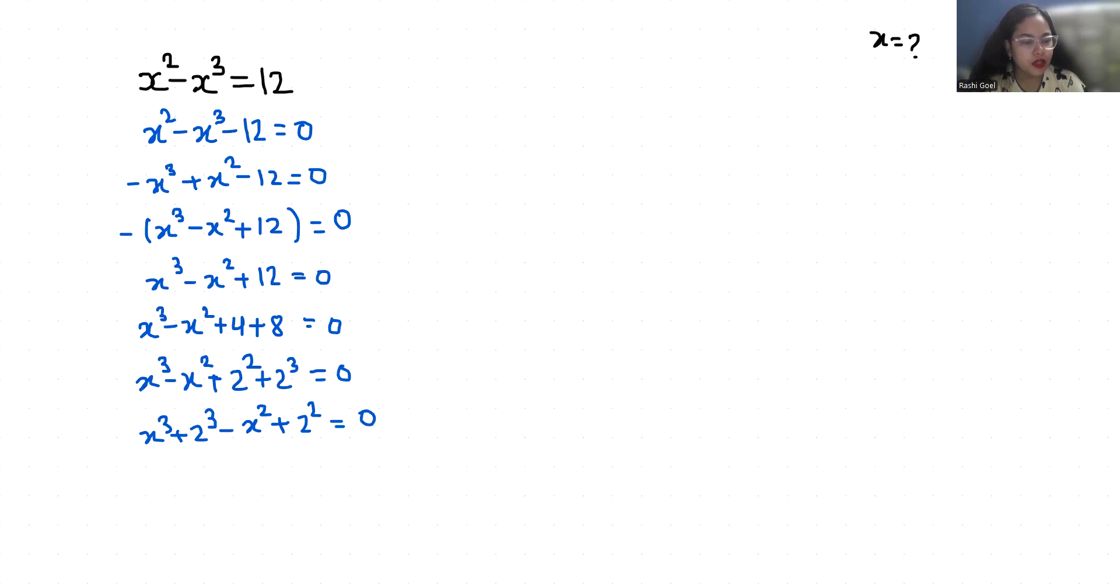x cube plus 2 cube minus, take as common, x square minus 2 square is equals to 0.